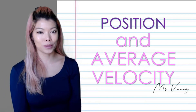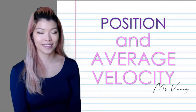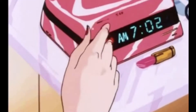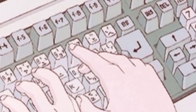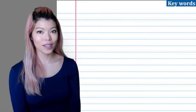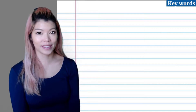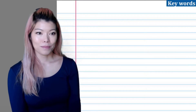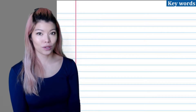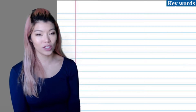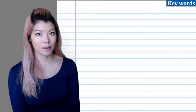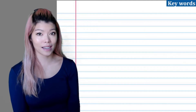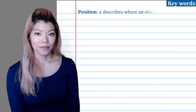Hi, I'm Miss Voong. Today we're going to look at position and average velocity. I really like this topic because we can see how things move — we use physics and math together. Before we start, let's look at some key words that we're going to use. The math is not going to be very challenging, but we're going to use lots of words and it might get confusing, so make sure you understand these words really carefully.